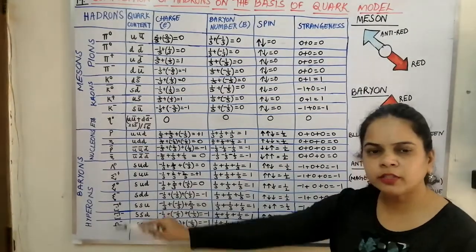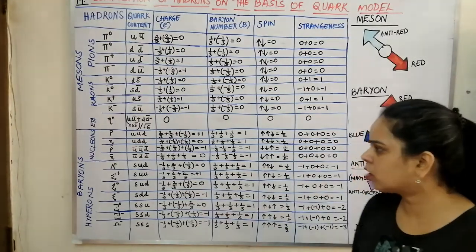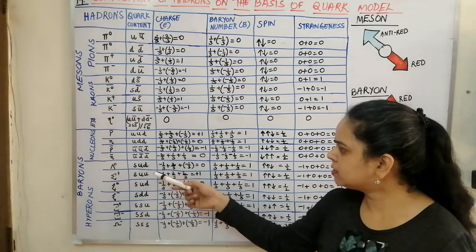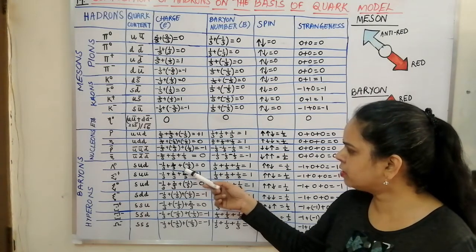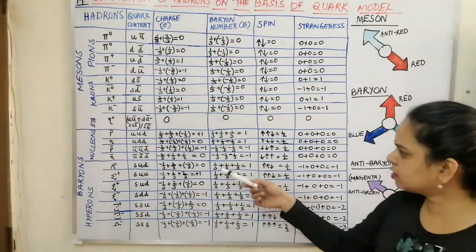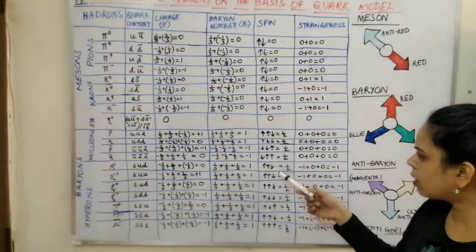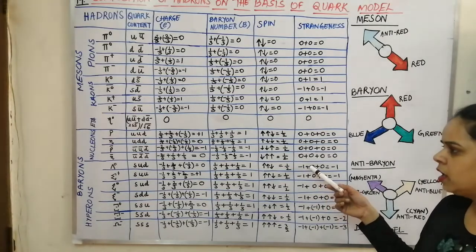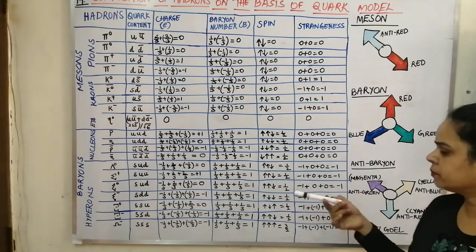In the hyperon family, Λ⁰ is the S, U, D combination. S has a charge of −1/3, U is +2/3, D is −1/3, so +2/3 − 2/3 = 0 charge. All are baryons, so baryon number is 1. With 2 up and 1 down the spin is 1/2. The strangeness number for the S quark is −1, and U and D have strangeness 0, giving Λ⁰ a strangeness of −1.